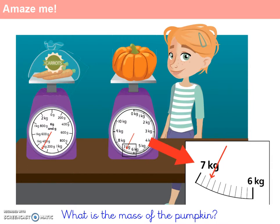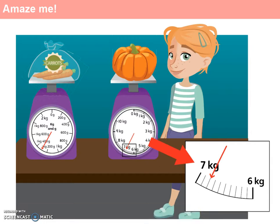For question 1b, we're asking, what is the mass of the pumpkin? Again, think about whether we're using kilograms or grams, and think about how we can identify exactly what that arrow is pointing to. Now you're ready to pause the video and work on both questions. Question 1a, what is the mass of the bag of carrots? And question 1b, what is the mass of the pumpkin?